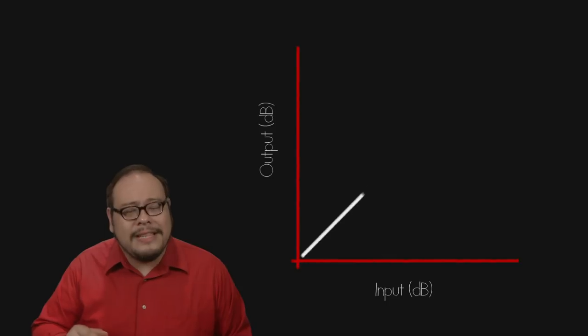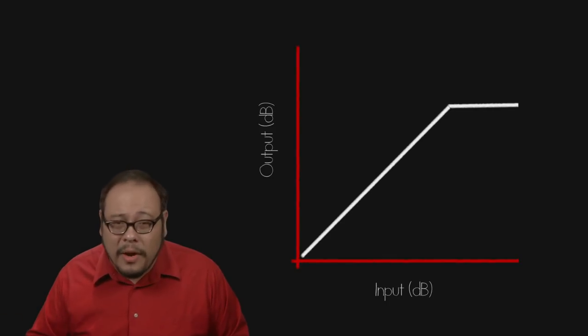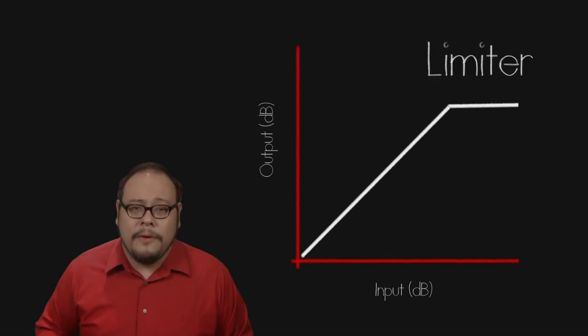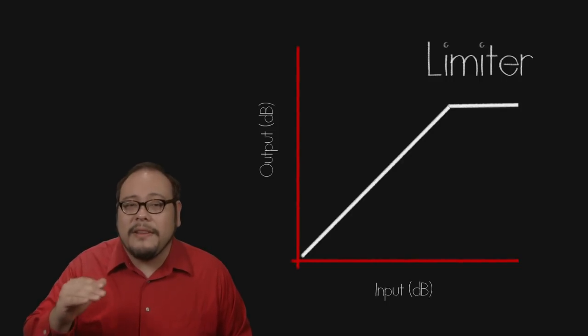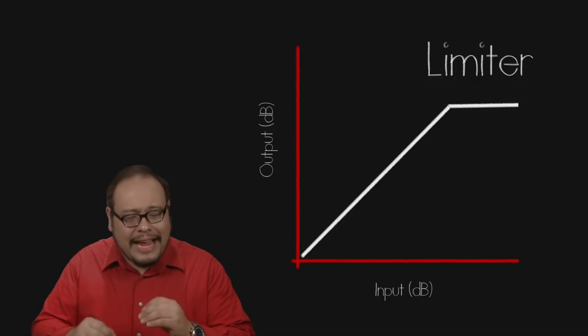If you push the slope flatter than say 20 to 1 or 100 to 1, you get what's called a limiter. A limiter essentially prevents peaks from going over a specific target, generally used for broadcast as they have very short attack and release times.